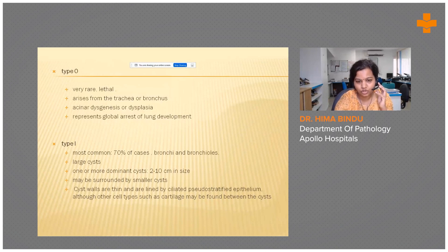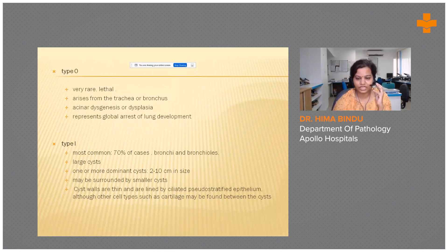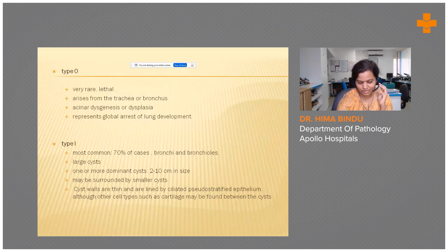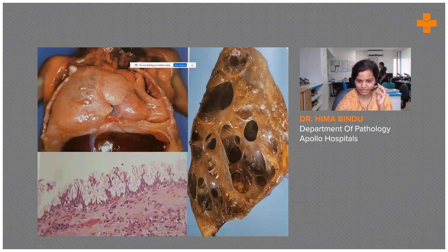Type 1 is the most common, accounting for about 70% of cases, like our case, which shows larger cysts with smaller cysts in the wall. These tend to have a very good prognosis if resected.